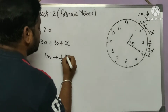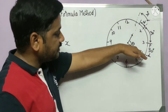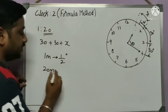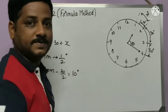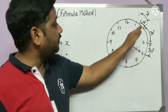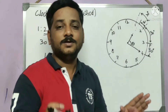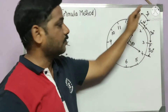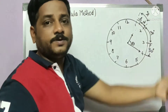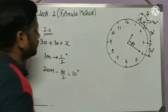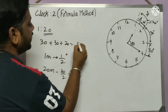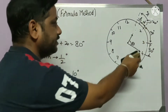Using Note 2 from the first video: if the minute hand moves one minute, the hour hand moves half a degree. The minute is 20, so the hour hand has moved 20 divided by 2 = 10 degrees from 1 o'clock. So within that 30-degree sector, 10 degrees are used, leaving x = 20 degrees remaining. Therefore, the angle = 30 + 30 + 20 = 80 degrees. This is the traditional method.